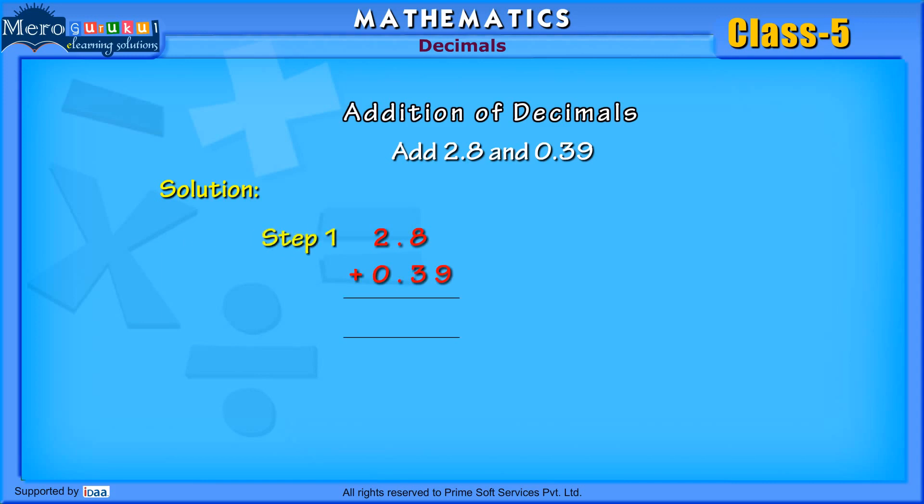First, we add the hundredths. 2.8 is same as 2.80. You can see by inserting these decimals in the place value table.